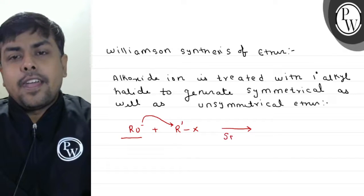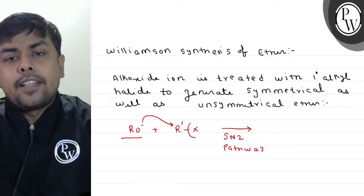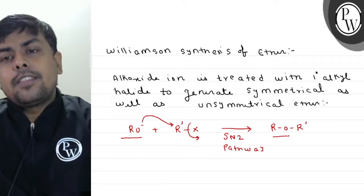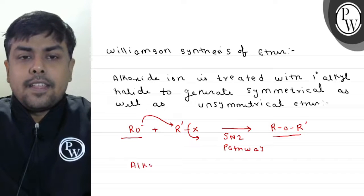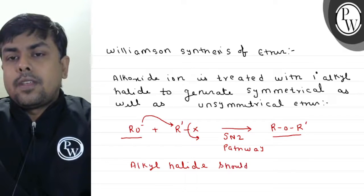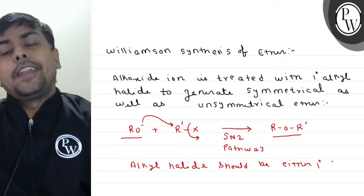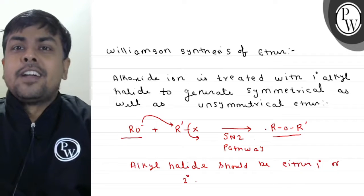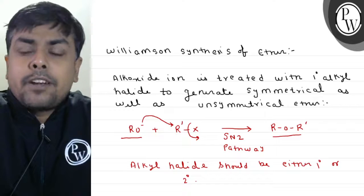This is an unsymmetrical ether. One condition: the alkyl halide should preferably be primary — sometimes secondary is acceptable. If a tertiary alkyl halide is used, instead of getting an ether, elimination will occur and we get an alkene. This was Williamson synthesis.